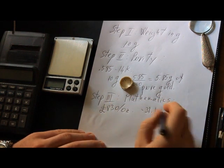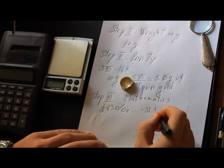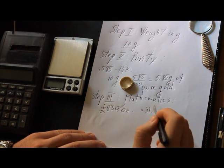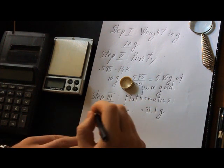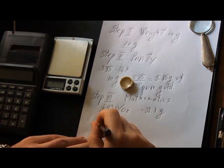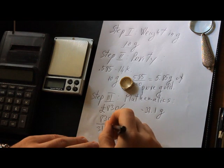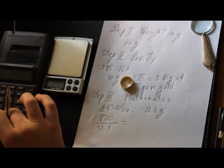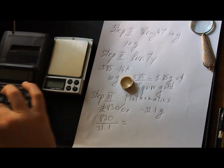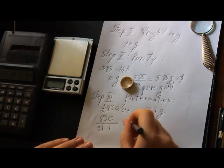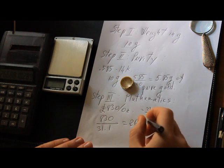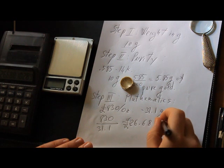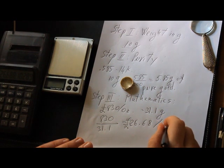Therefore, we need to divide 830 by 31.1 in order to find out the price in pounds per one gram of pure gold. So 830 divided by 31.1 equals 26.68 pounds per gram of pure gold.